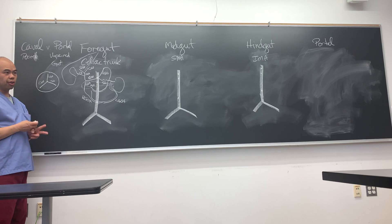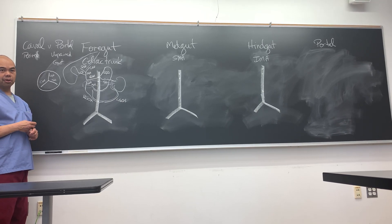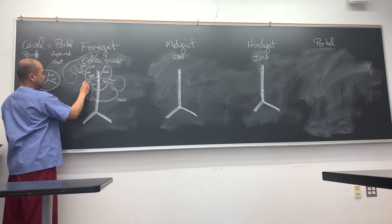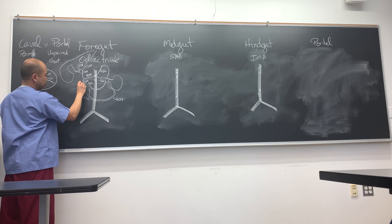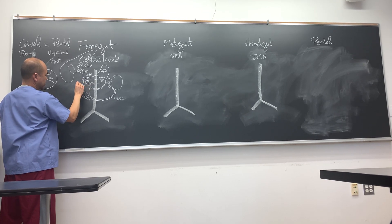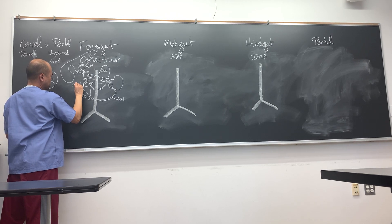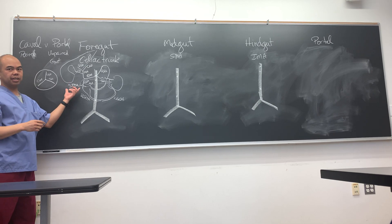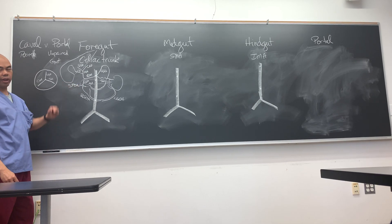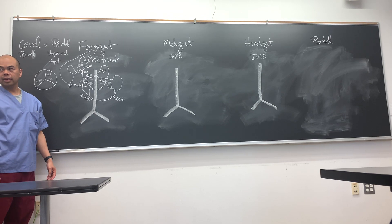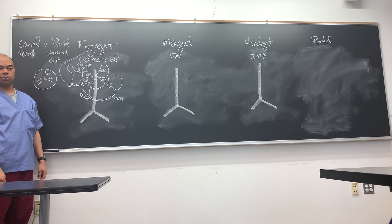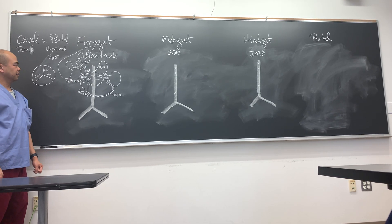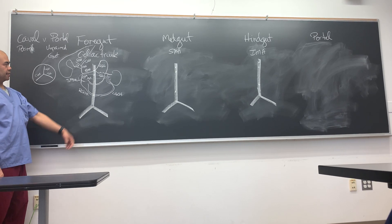There are two other important arteries you won't see in the cadaver, but they're super important because they go to the head of the pancreas. Off the gastroduodenal artery we have the superior pancreaticoduodenal arteries - there's an anterior and a posterior. Both are superior. The inferior pancreaticoduodenal also comes off the GDA. That's the celiac trunk.